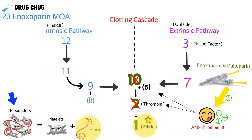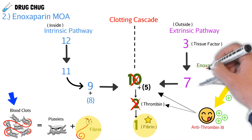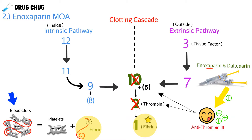One cool note: in the word enoxaparin you see the letters 'xa,' which stands for activated factor 10 — one of the main clotting factors that it blocks.